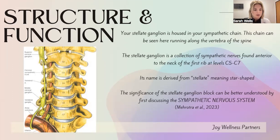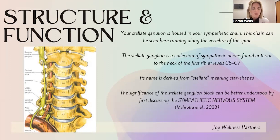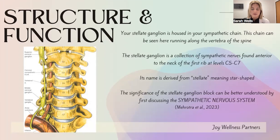You can see the middle cervical region near C5, C6, C7 — right around that C6 bundle. That's usually our target: the fascia surrounding that little bundle. As a fun fact, the name is derived from 'stellate,' meaning star-shaped, and you can see those star-like projections in that middle cervical ganglion.